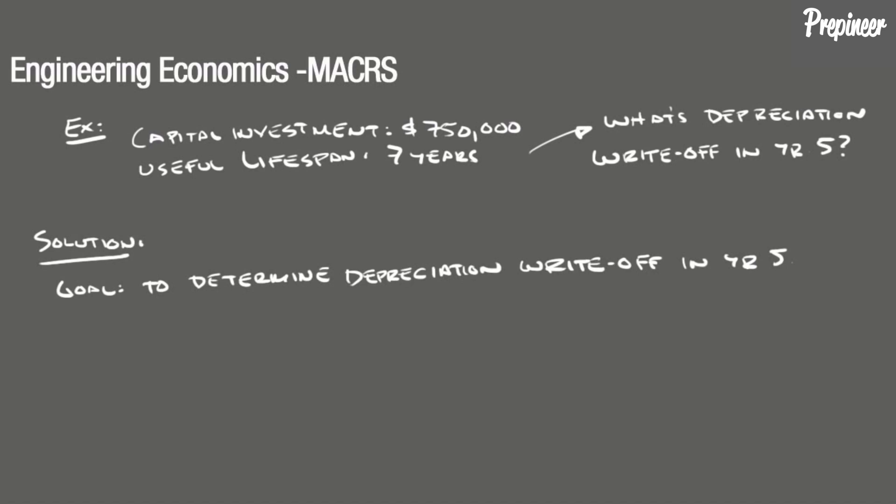To determine the depreciation charge for any year within the useful lifespan, we can refer to the formula found on page 115 of the NCEES Supplied Reference Handbook for the Accelerated Cost Recovery System, which states that D sub J equals some factor times C, where D sub J is the depreciation in year J, and C is the cost of the piece of equipment.